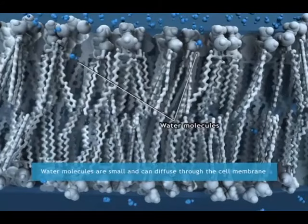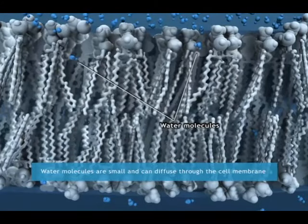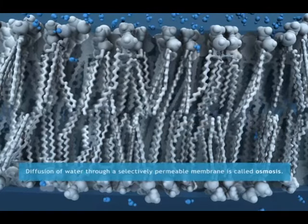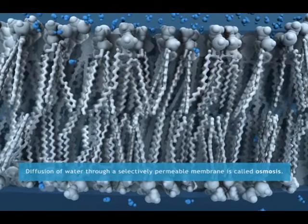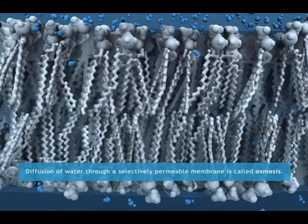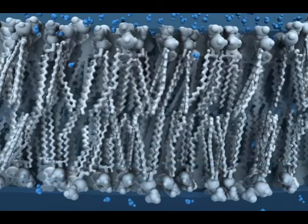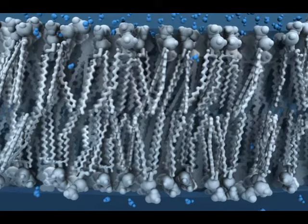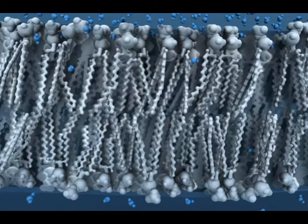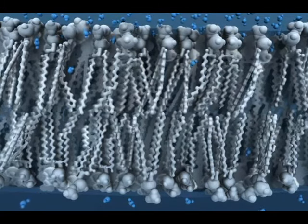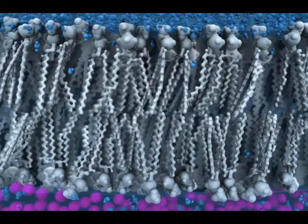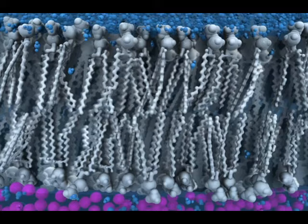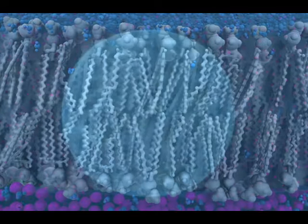Water molecules are small and can diffuse through the cell membrane. Diffusion of water through a selectively permeable membrane is called osmosis. Like other forms of diffusion, osmosis involves the net movement of a substance, water, down its concentration gradient. The direction of water movement across the cell membrane depends on the relative concentration of free water molecules in the cytoplasm and in the fluid outside the cell. There are three possibilities for the direction of water movement.